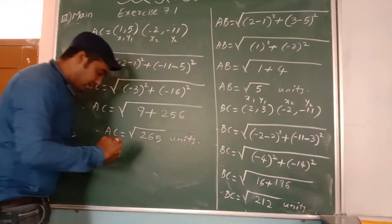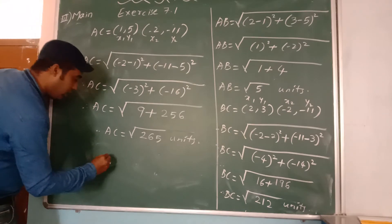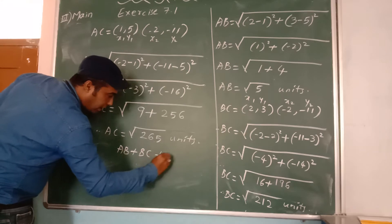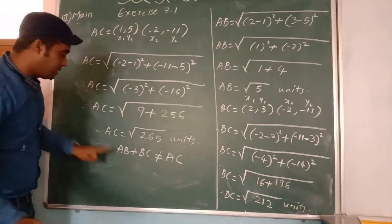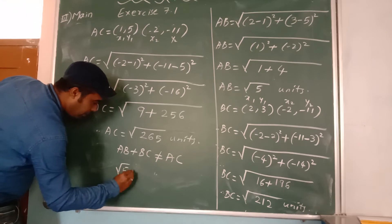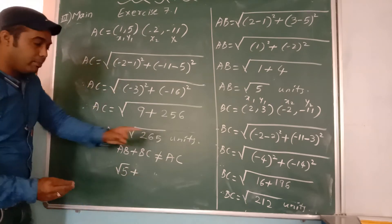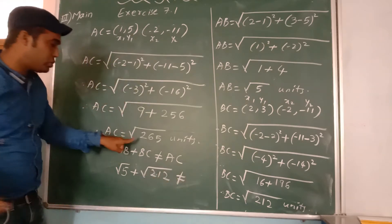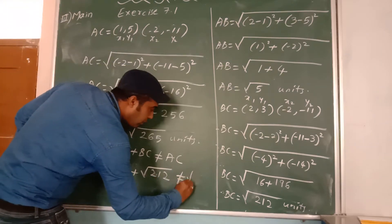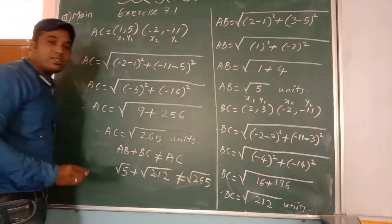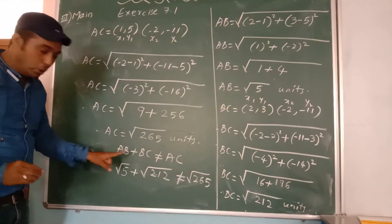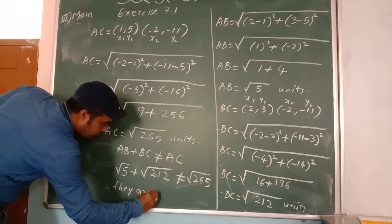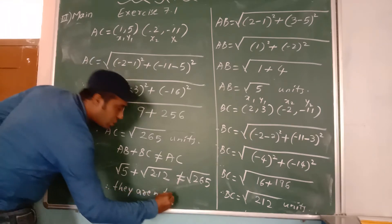So this is AC. Now we can observe AV plus VC is not equal to AC, because AV is root 5 plus VC is root 212, which is not equal to AC, that is square root of 265. Therefore, they are not collinear.